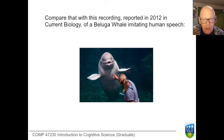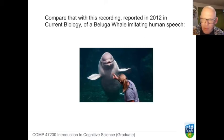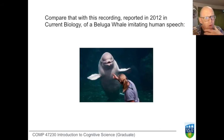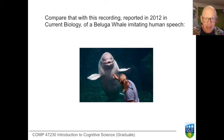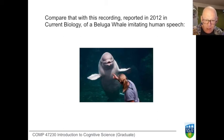This elephant then developed an absolutely stunning and unique form of vocalization, never before observed and never since, in which it would take its trunk, curl it around, stick it down its own throat, and blow very hard. This produced a sound which it could modify with its mouth to produce intelligible Korean syllables — context-appropriate intelligible Korean syllables that it had learned in the course of its work, reproduced in a context-appropriate fashion.